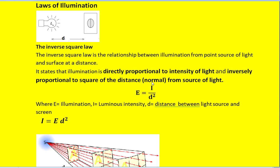The inverse square law states that the illumination E received by the surface is equal to I divided by d squared. E is directly proportional to luminous intensity I and inversely proportional to the square of the distance. Since luminous intensity does not change, we can rearrange this as I = E·d².